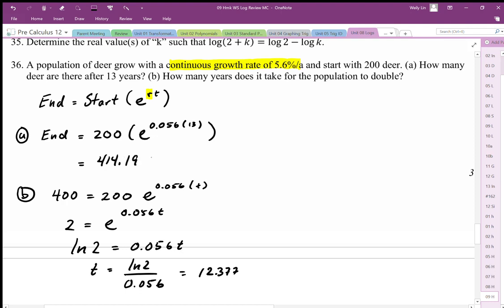414.189, or we can say 414 deer. So the first solution was incorrect—I punched in the wrong value into the calculator. For the second one, this is going to be in years.